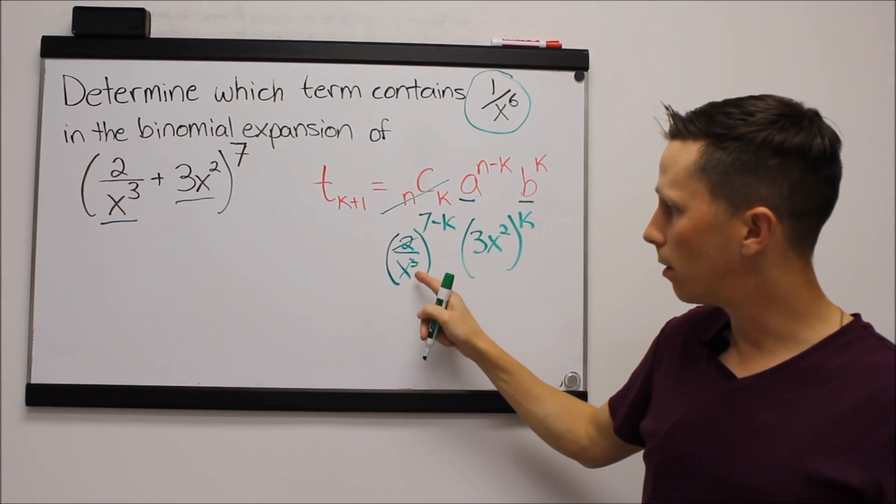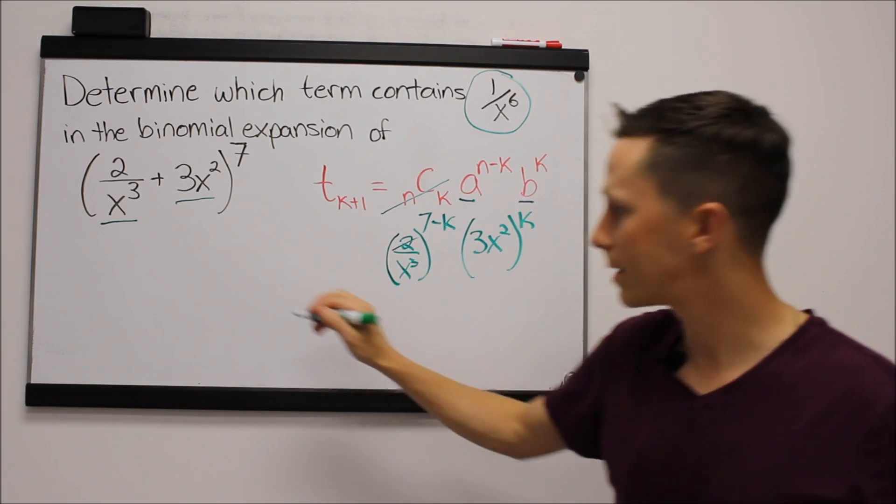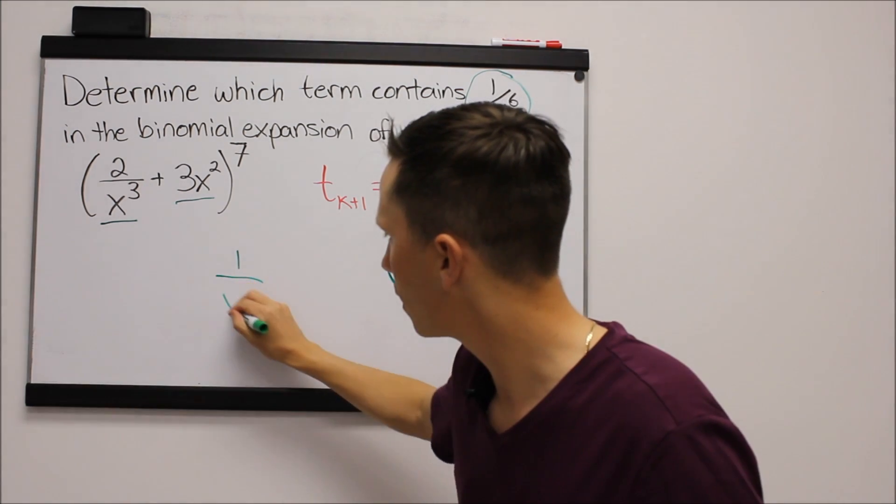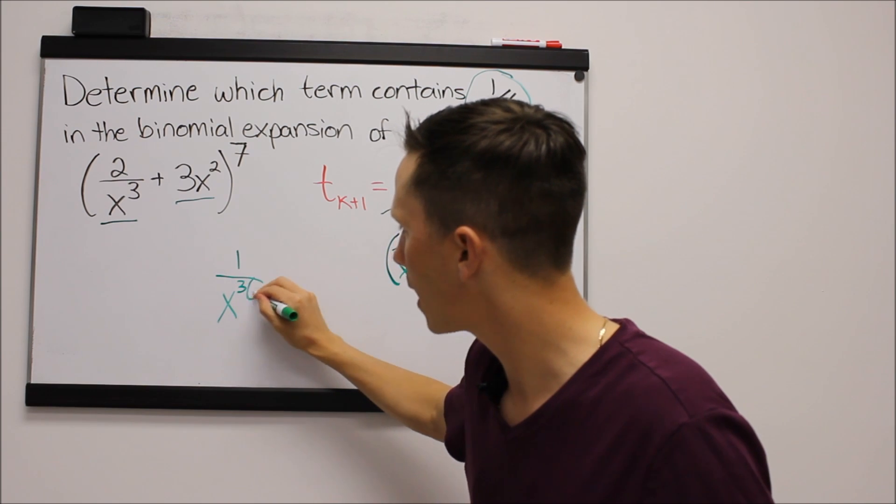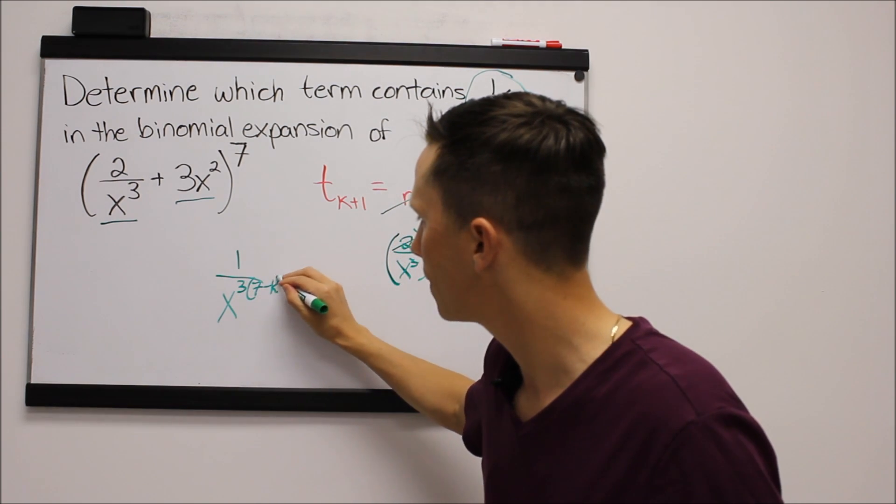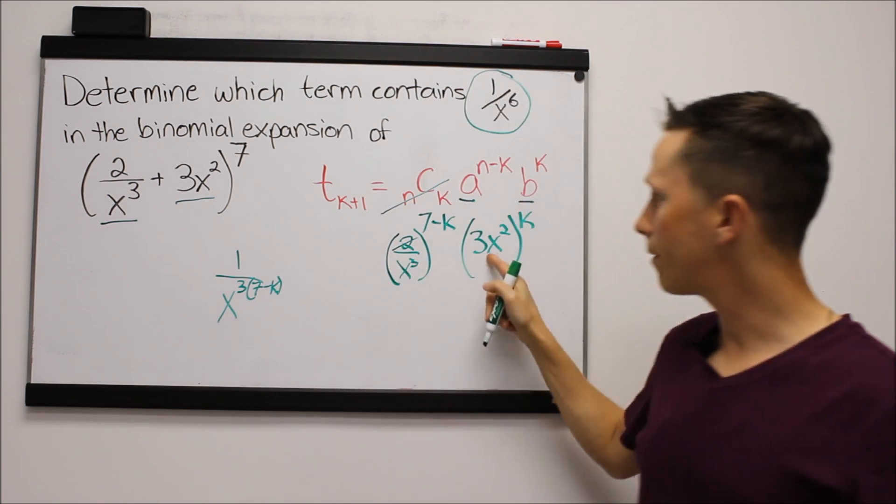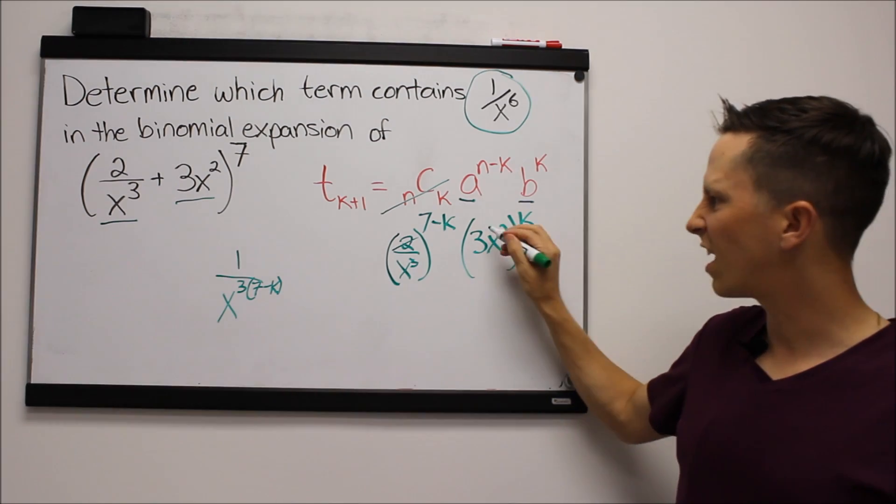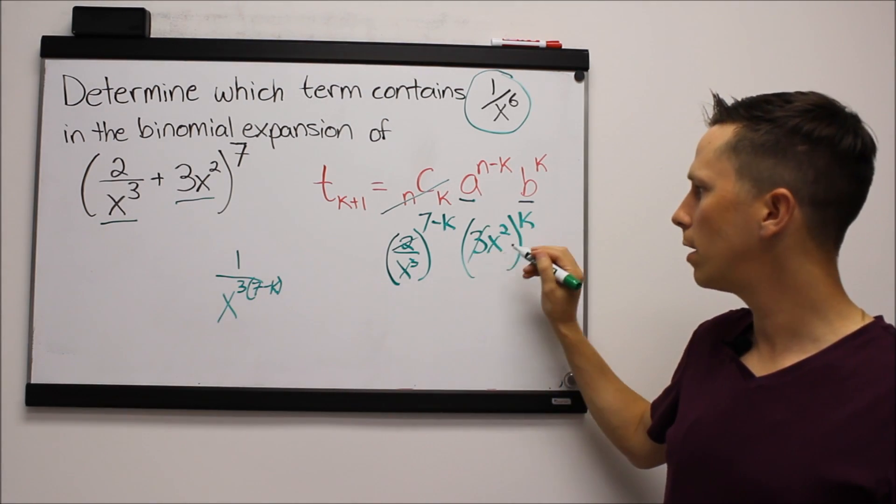So what's going to happen here, we're going to get x to the 3 times 7 minus k. So I'm going to think of it like this: x to the 3 times 7 minus k, and in the other term we're going to have 3x squared. Again, I'm going to ignore the 3.